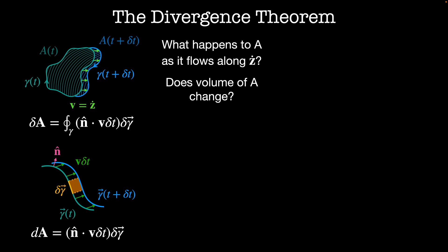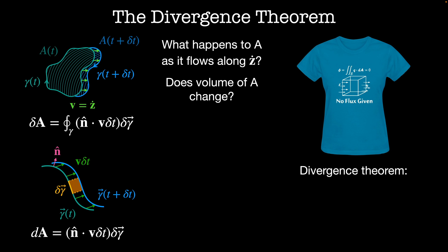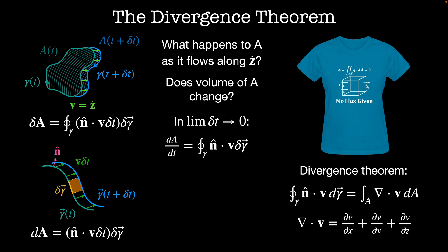We can calculate this line integral using the divergence theorem. The divergence theorem states that if we have a surface A with a normal vector n, then the integral around the boundary of the surface gamma of the normal dotted into some vector field v is equal to the integral over the surface of the divergence of v, where the divergence is equal to dv/dx plus dv/dy plus dv/dz. So in the limit that delta t goes to zero, the rate of change of the area in our region is given by the integral around gamma of n hat dotted into v d gamma, which according to the divergence theorem is equal to the integral across the surface A of the divergence of the dynamics z dot. And we'll find out in a minute that the divergence of z dot is equal to zero, so the area doesn't change.